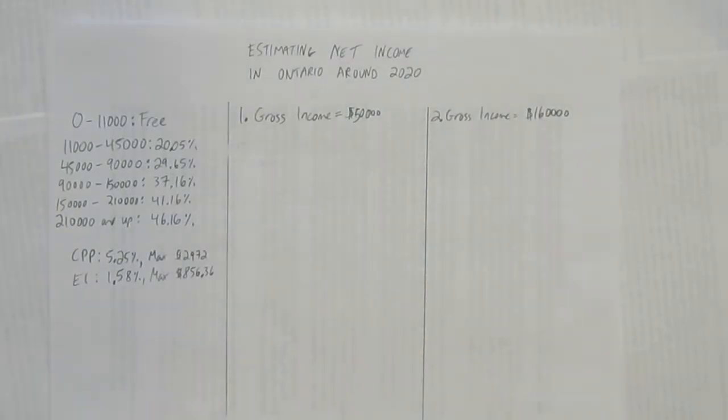Second of all, I'm fudging the brackets a little bit. They're quite precise down to the dollar and they're different provincially and federally. There's two different percentages that I've combined but the brackets are slightly off. I've made the numbers simple. And finally these numbers I'm giving you are for around 2020. After that it's gonna be off because the numbers change often. Anyway let's get started estimating net income in Ontario around the year 2020.